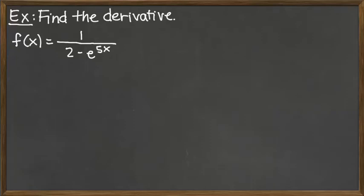To take the derivative of this fraction, 1 over the factor 2 minus e to the 5X, we need to use the quotient rule.